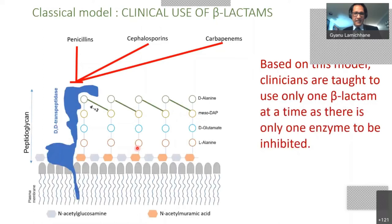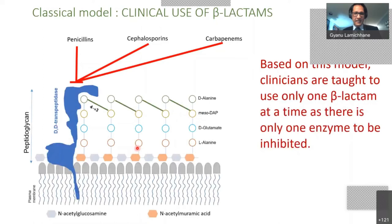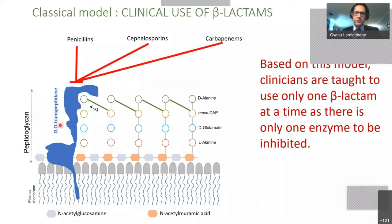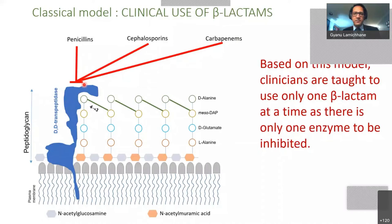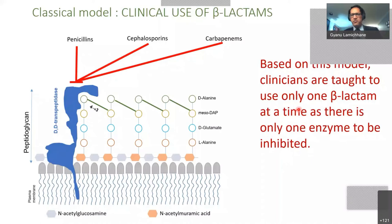Now let's bust another myth. The classical model said all beta-lactam classes inhibit the penicillin-binding protein/DD transpeptidases, and based on this model, clinicians were taught to use only one beta-lactam at a time — because there's only one enzyme to be inhibited. If you use two beta-lactams it would be redundant. If you ask a doctor today, most will say no, you cannot give two beta-lactams at the same time, because that's what the textbook says. We will bust that myth now.